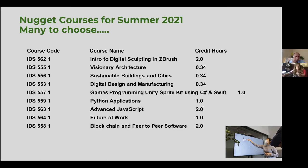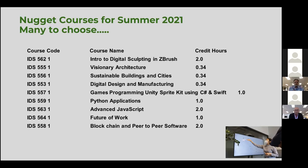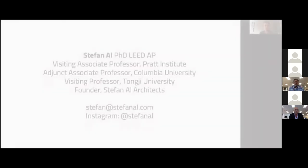Here is a list of current Nugget courses: Introduction to Digital Sculpting using ZBrush; Visionary Architecture, taught by Dr. Stefan Elm — a world-famous architect; Sustainable Buildings and Cities — smart city designs taking into consideration global warming; Digital Design and Manufacturing, also by Dr. Stefan Elm; Game Programming using Unity, SpriteKit, C#, and Swift; Python Applications; Advanced JavaScript; Future of Work; Blockchain and Peer-to-Peer Software.